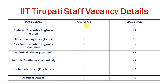Here are these vacancies with post name, vacancy count, and age limit. The first post is Assistant Executive Engineer in Civil. Vacancy is one, maximum age limit is 45. Minimum qualification is B.E. or B.Tech with eight years experience.